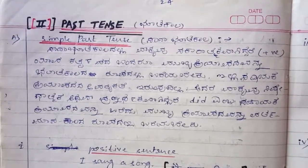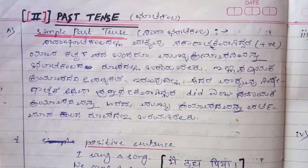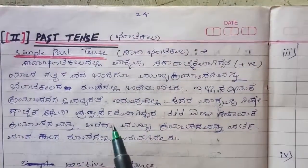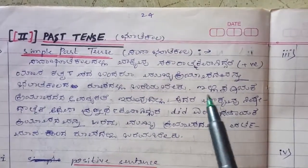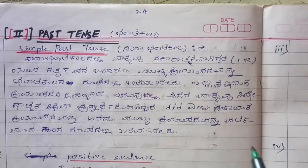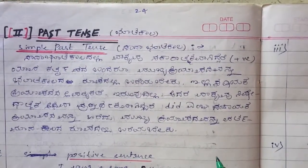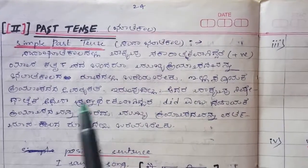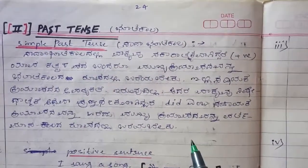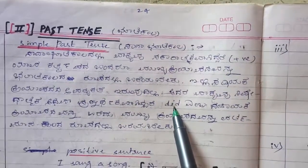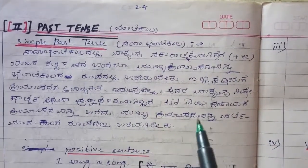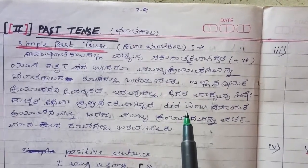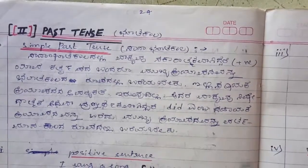Let us learn which pronouns to use, which helping verbs to use, what the main verb will be, and how to create the sentence. In a positive sentence in simple past tense, for any pronoun, we should not use any helping verb. If it is negative, the helping verb should be 'did,' and the main verb in a positive sentence should be past tense — that is, verb two. In a negative sentence, the main verb should be present tense.